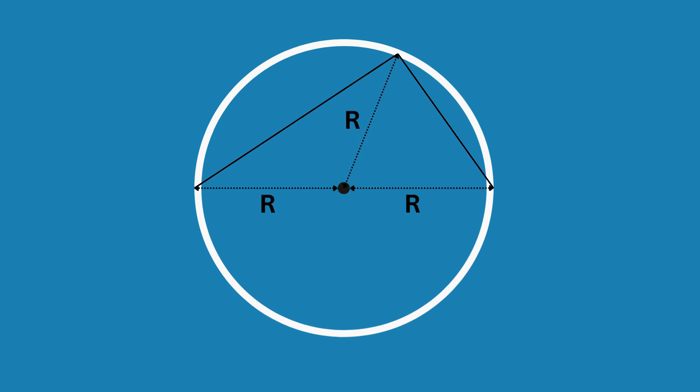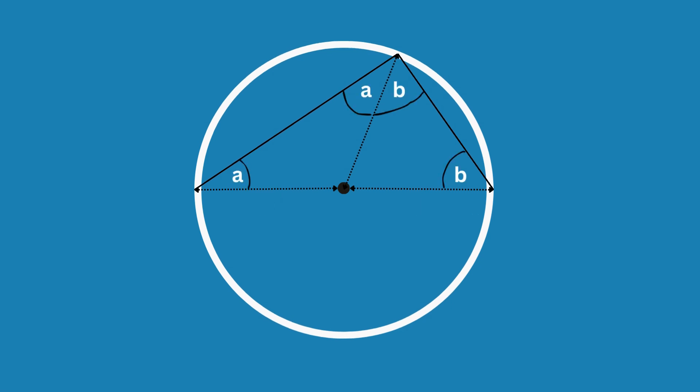We can also draw another radius since the third corner is also on the circumference. We have now drawn two smaller triangles. Each one has two equal sides and therefore two equal angles, since they are isosceles triangles.